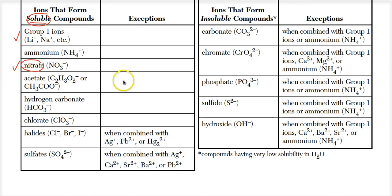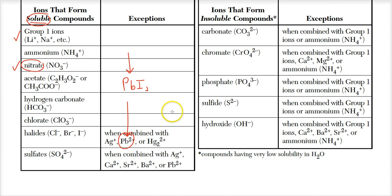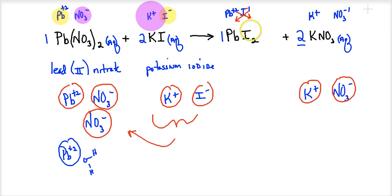Now let's look at lead(II) iodide, PbI₂. Is this soluble? I look through the list: no lead listed, but iodine is listed as soluble — however, there are exceptions. Lead(2+) is one of those exceptions, meaning iodide is normally soluble except with these three ions, and lead is one of them. So lead(II) iodide is insoluble.